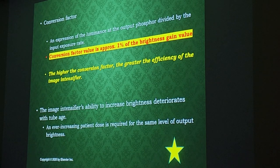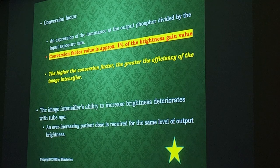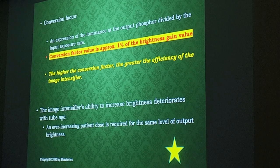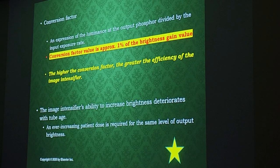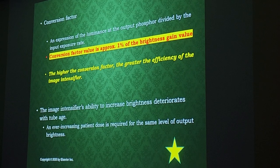Typically when you do the conversion factor formula, the answer you get is approximately going to be one percent of your brightness gain value. So if you do a problem using the brightness gain and then do a problem using conversion factor, your conversion factor answer will be one percent of your brightness gain answer — because the division is inverted: input divided by output versus output divided by input.